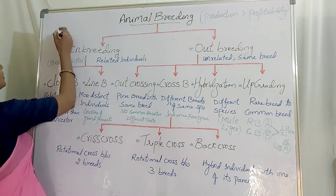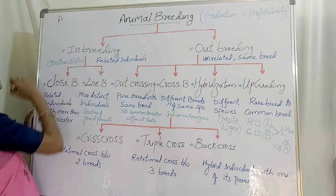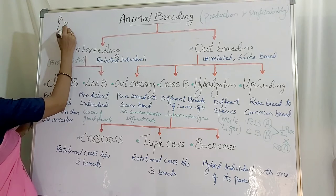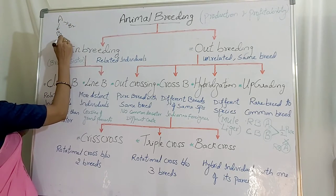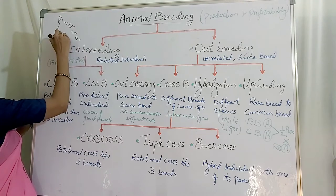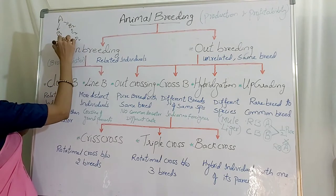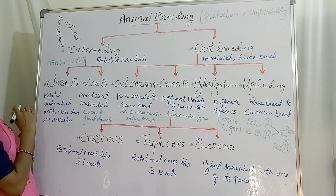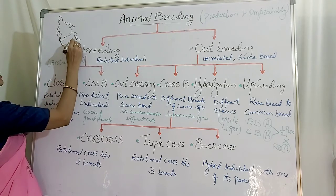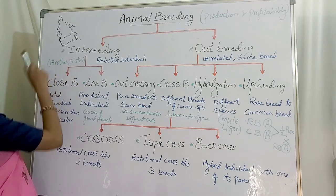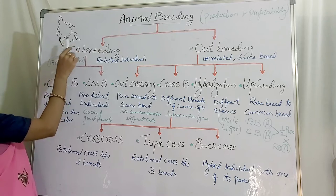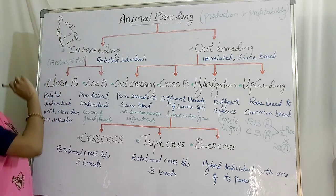For example, consider ancestor A. In the first generation you have B1 and B2, then C1, C2, D1, D2. If there is a cross between C1 and C2, or D1 and D2, that means it is an inbreeding process where they are closely related individuals whose ancestor is the same.